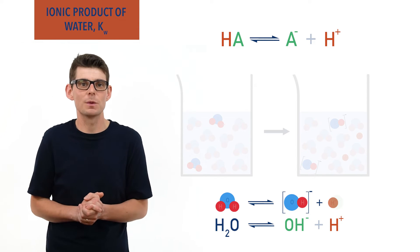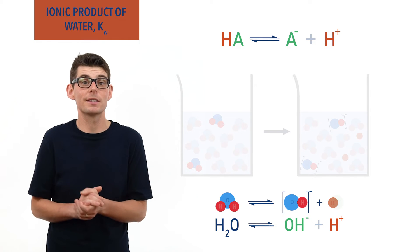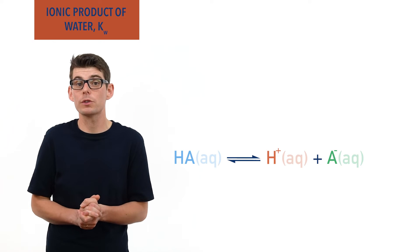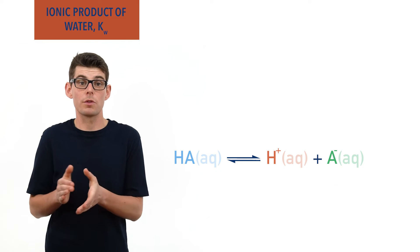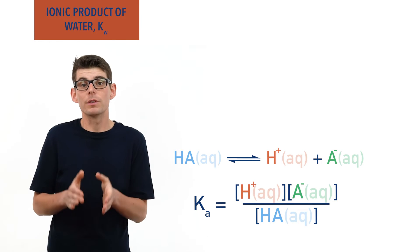If we treat water as a weak acid, we can write out an expression to find its acid dissociation constant, KA. If KA equals concentration of H plus times concentration of OH minus divided by concentration of HA, then for water, KA equals concentration of H plus times concentration of OH minus divided by concentration of H2O.